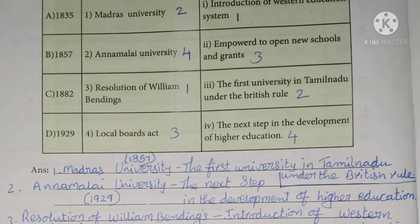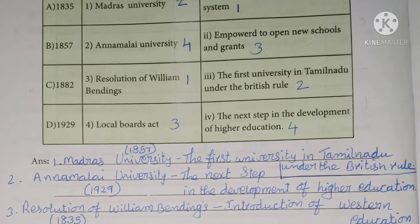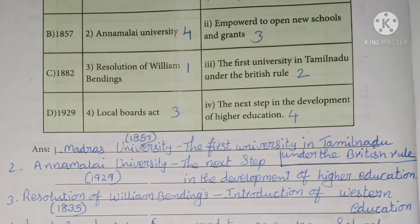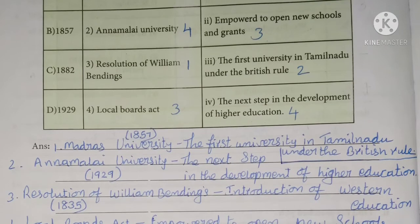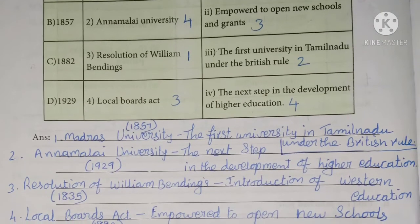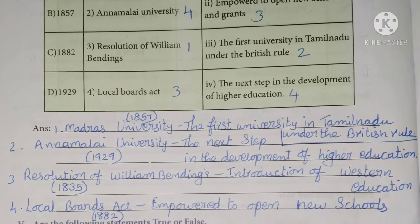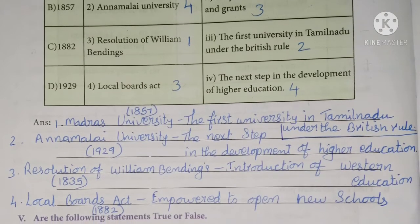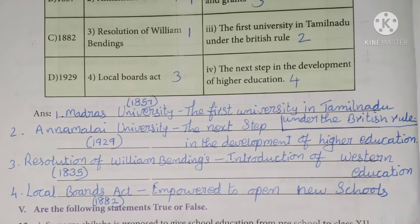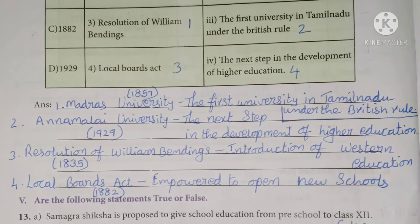Annamalai University started in 1929 — the next step in the development of higher education. The resolution of William Bentinck is 1835 — introduction of Western Education. And the fourth one is Local Boards Act, in the year 1882 — empowered to open new schools.